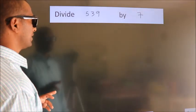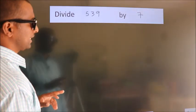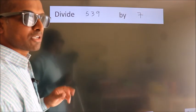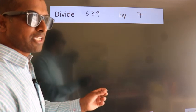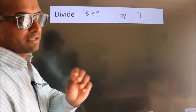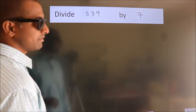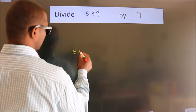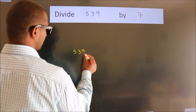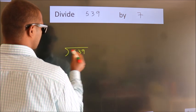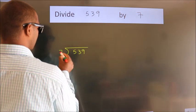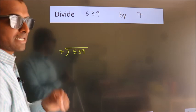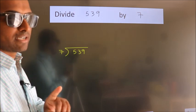Divide 539 by 7. To do this division, we should frame it in this way: 539 here, 7 here. This is your step 1.